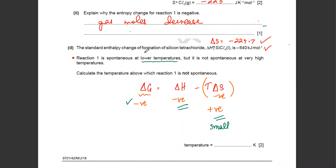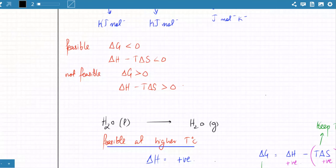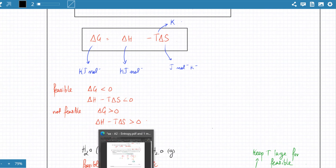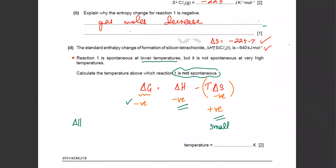The next question asks to calculate the temperature above which reaction one is not spontaneous. When is the reaction not spontaneous? When delta G is greater than zero. So delta G = delta H minus T delta S must be greater than zero. Substituting: delta H is minus 640 and delta S is minus 225.7.